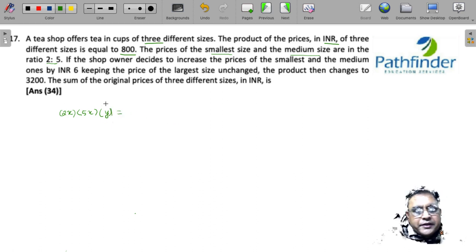So I have to take the actual price, and this product must be equal to 800. So what do you get here? 10 multiplied by x² multiplied by y is equal to 800.